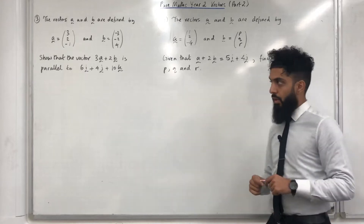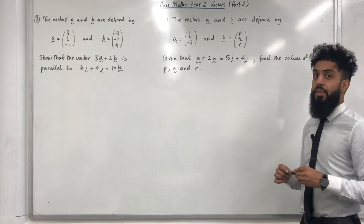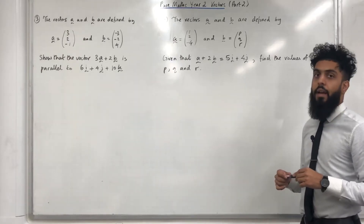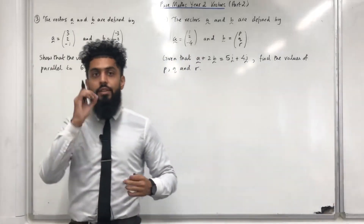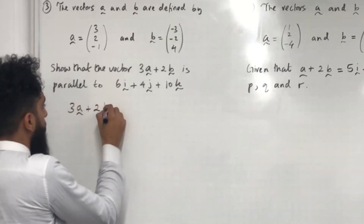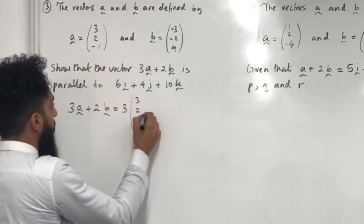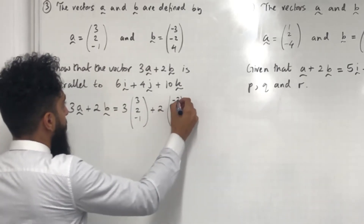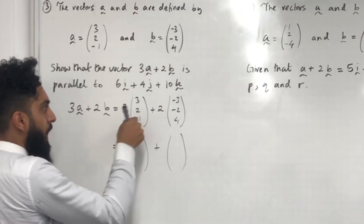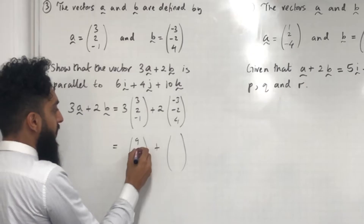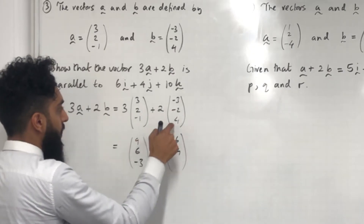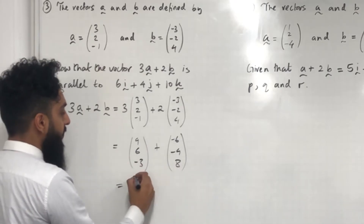Moving on to question number 3. The vectors a and b are defined by a equals (3, 2, minus 1) and b equals (minus 3, minus 2, 4). Show that the vector 3a plus 2b is parallel to the vector 6i plus 4j plus 10k. First we find 3a plus 2b as a column vector: 3 lots of (3, 2, minus 1) plus 2 lots of (minus 3, minus 2, 4). Multiplying gives (9, 6, minus 3) plus (minus 6, minus 4, 8). Adding the two column vectors gives (3, 2, 5).